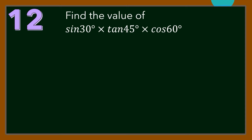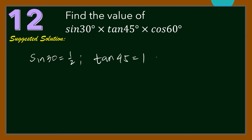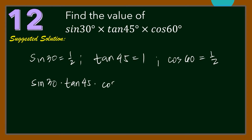Number 12. Find the value of sine 30 times tangent 45 times cosine 60. Since 30, 45, and 60 degrees are special angles: sine 30 equals 1/2, tangent 45 equals 1, and cosine 60 equals 1/2. Hence, sine 30 times tangent 45 times cosine 60 equals 1/2 times 1 times 1/2, which equals 1/4.